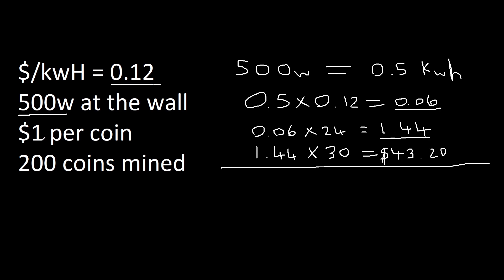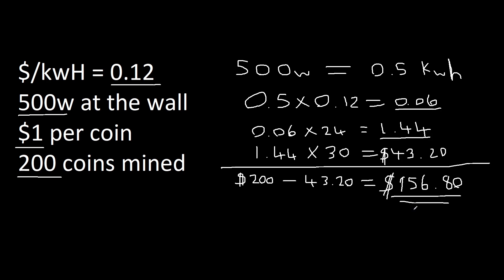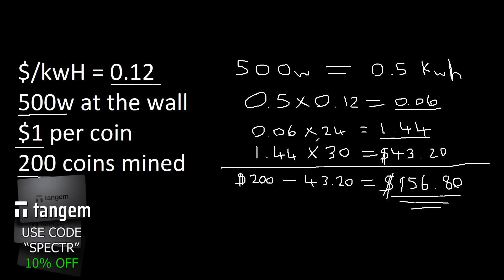Now for the revenue side: at $1 per coin, we mined 200 coins in the month, giving $200 in revenue. Subtract the $43.20 power cost and we get a profitability of $165.80 for the month. Obviously those are very favorable numbers — real GPU and ASIC profits tend to be closer. If you're in the negative after this calculation, you need to either improve efficiency through overclocking or GPU re-padding, or lower your power costs by speaking to your provider about different plans.